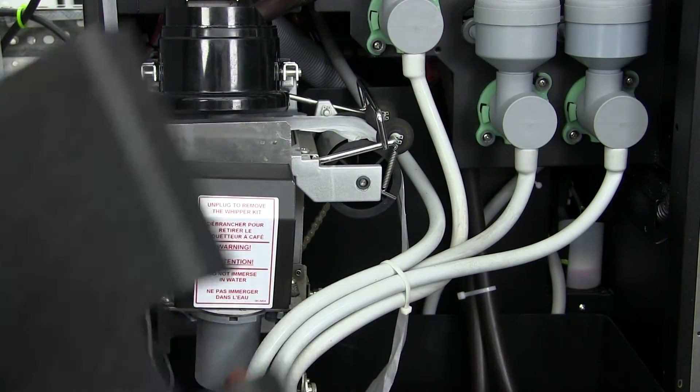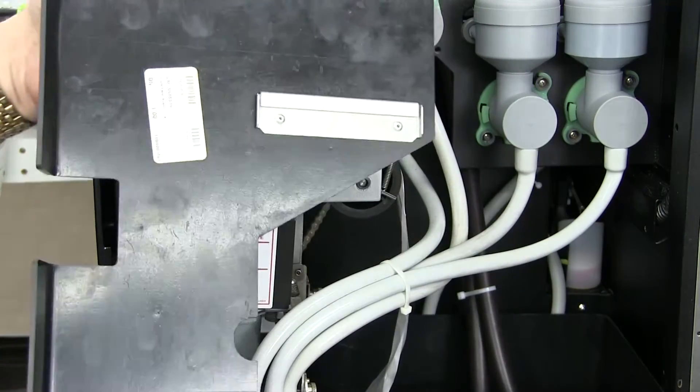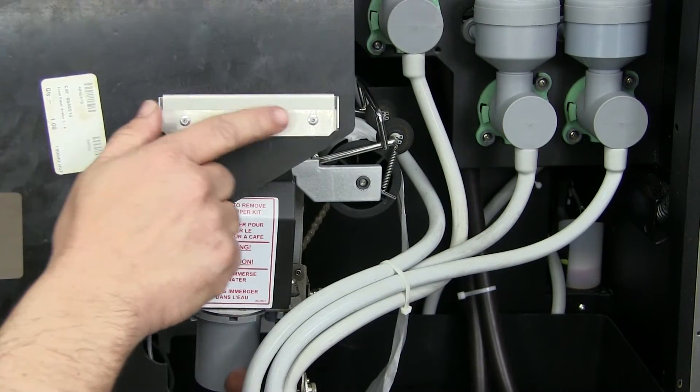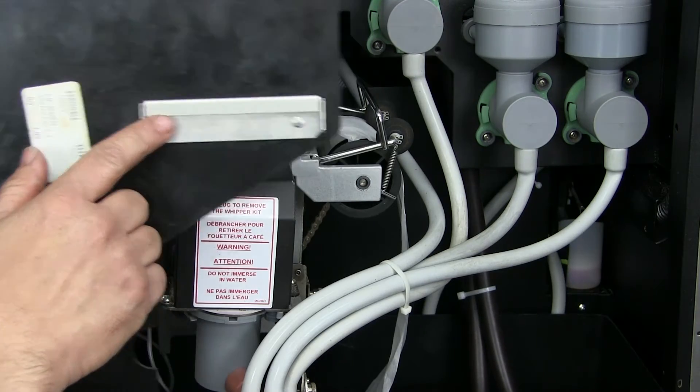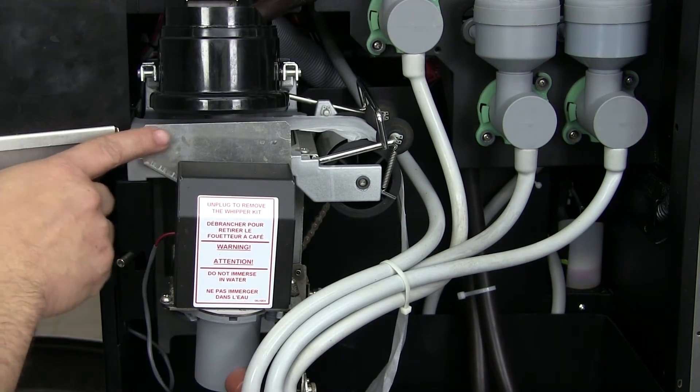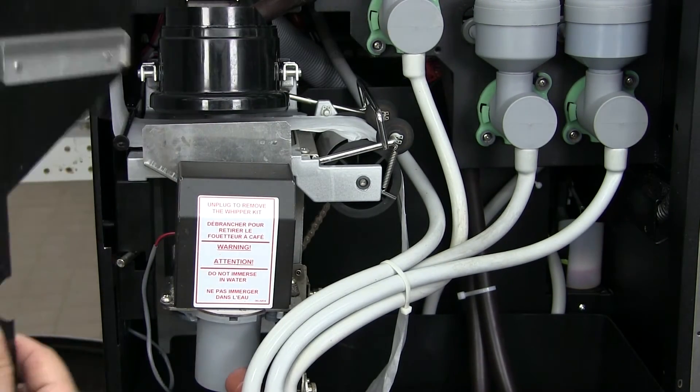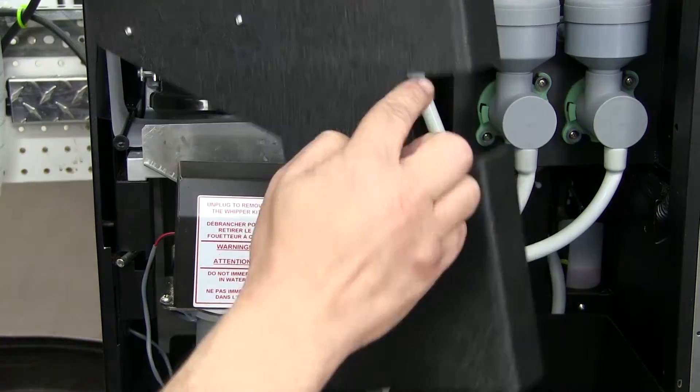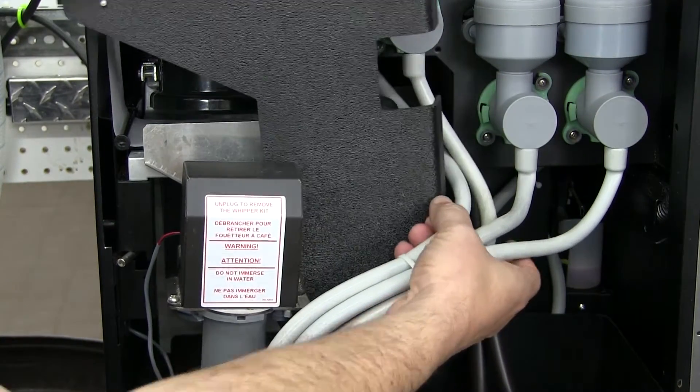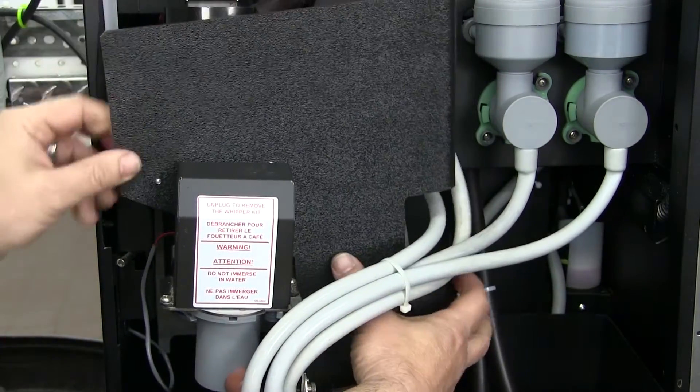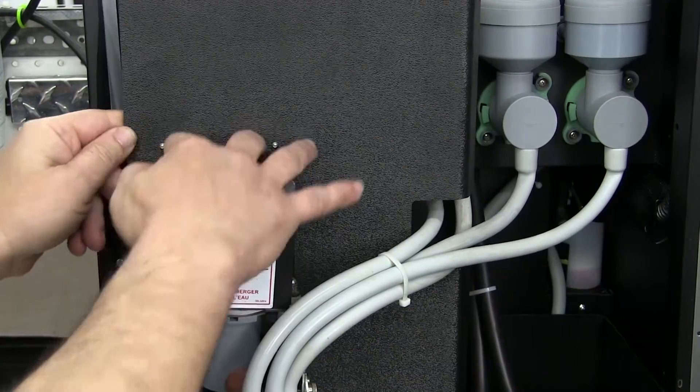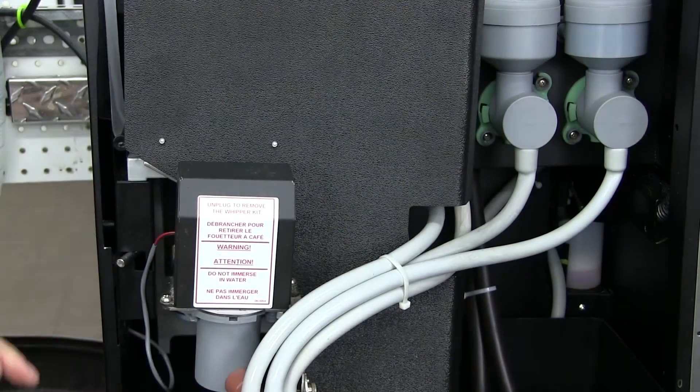The next thing that we'll put in place is the guard. Now the guard has a small aluminum bracket on the back of it. The hoses pass through the side of the guard, we slip it down in, and then we make sure that our bracket on the back grabs that lip.